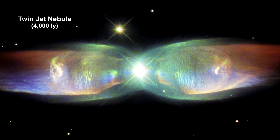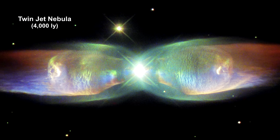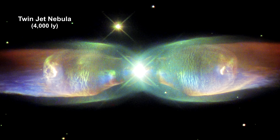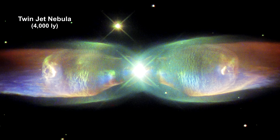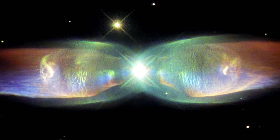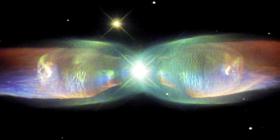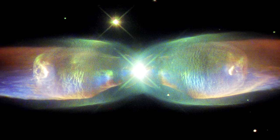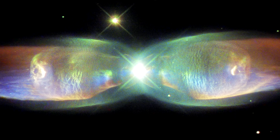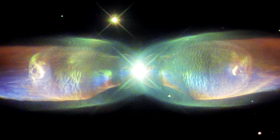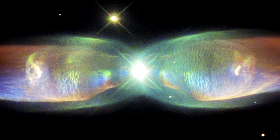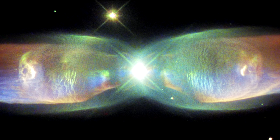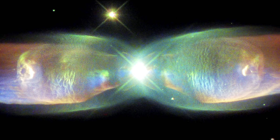The Twin Jet Nebula is a striking example of a bipolar planetary nebula. Bipolar planetary nebulae are formed when the central object is not a single star, but a binary system. The nebula's size increases with time, and measurements of this rate of increase suggest that the stellar outburst that formed the lobes occurred just 1,200 years ago.